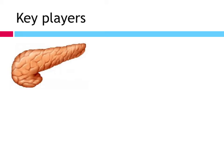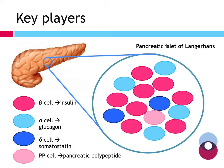Looking at the pancreas itself, we're particularly interested in the islets of Langerhans — the collection of cells important in hormone production. The predominant cell type is the beta cell, our insulin-producing cell. We also have alpha cells that produce glucagon, delta cells that produce somatostatin — which broadly acts to encourage an increase in blood glucose — and pancreatic polypeptide cells, which regulate secretion of other hormones and enzymes from the pancreas.